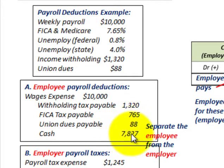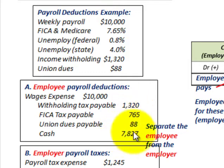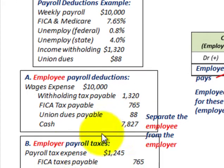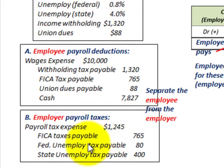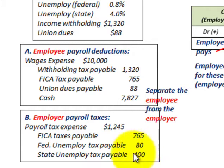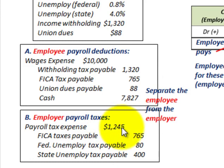The wage expense is debited for $10,000, so cash is the balancing credit amount of $7,827. For the employer's payroll taxes: FICA tax payable is 7.65% of $10,000 for $765; federal unemployment tax at 0.8% is $80; and state unemployment tax at 4% is $400. Totaling those up, you get a debit to payroll tax expense of $1,245.